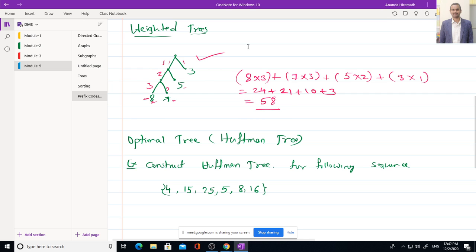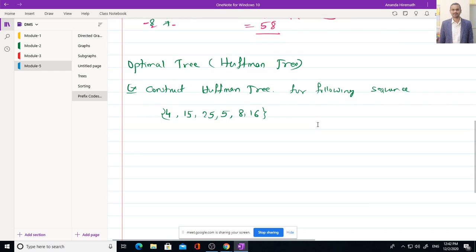Next is optimal tree or it is also called as Huffman tree. The example will be construct Huffman tree for following sequence: 4, 15, 25, 55, 58 and 16. We are supposed to construct optimal tree or Huffman tree.